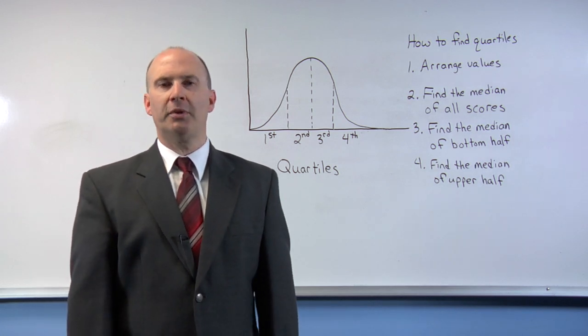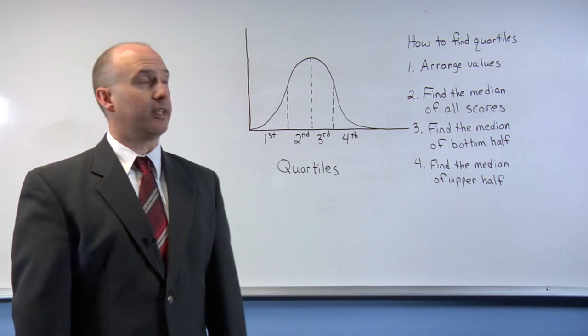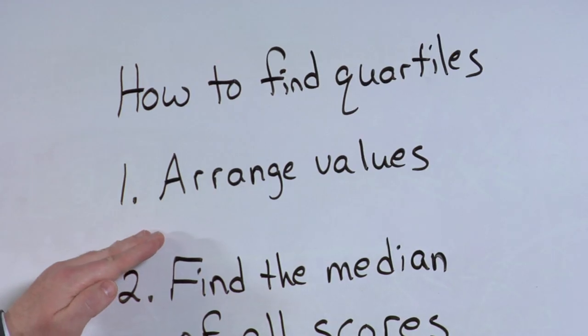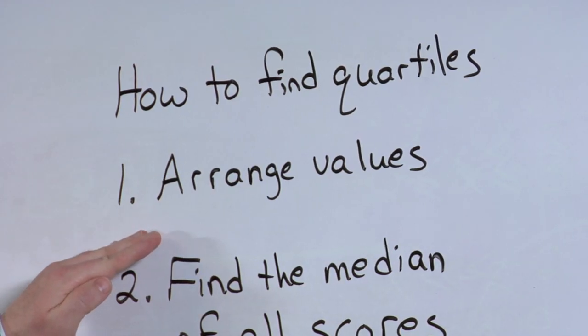There's four steps in determining the quartiles of a collection of data. The first step is to arrange the values of all the data from smallest to largest.